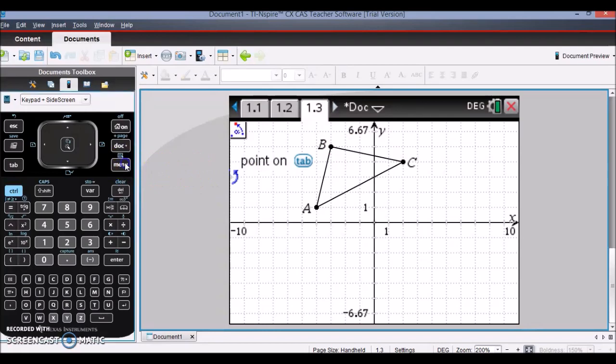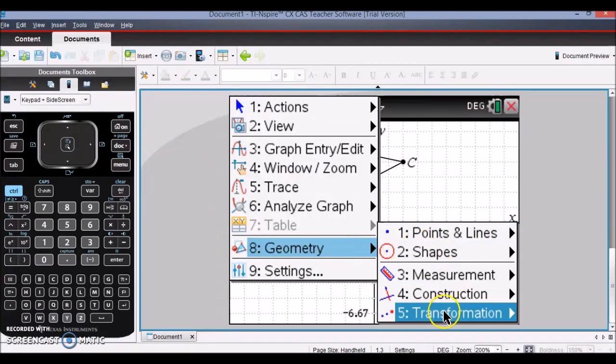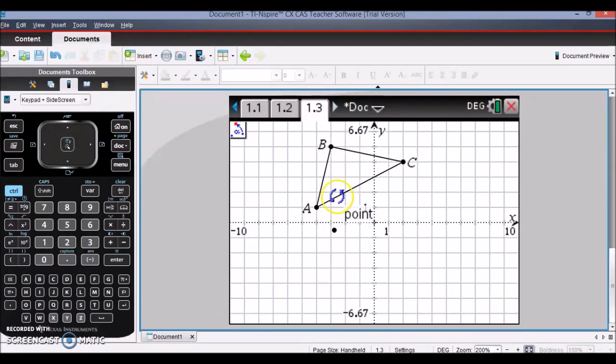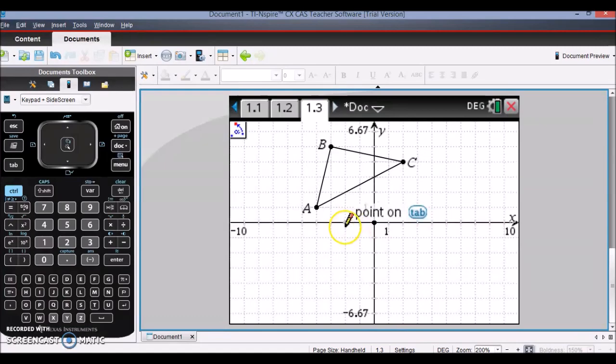So to do the rotation, we'll go back to our transformation menu. And I'm going to select the object and select the point I want to rotate around. Maybe I want to use the origin. And then you need to type in the degrees that you want to rotate your shape.